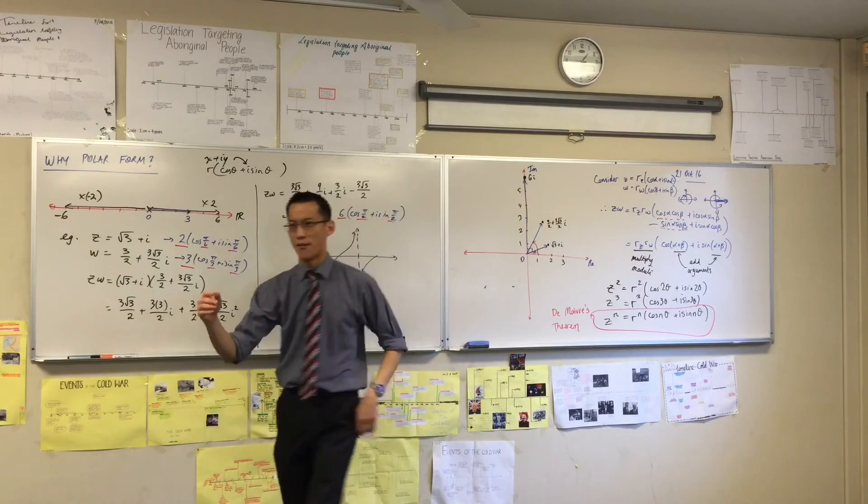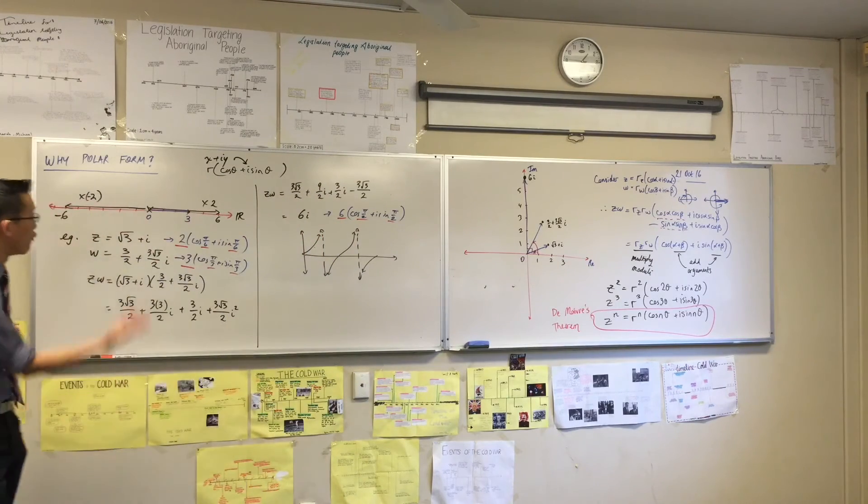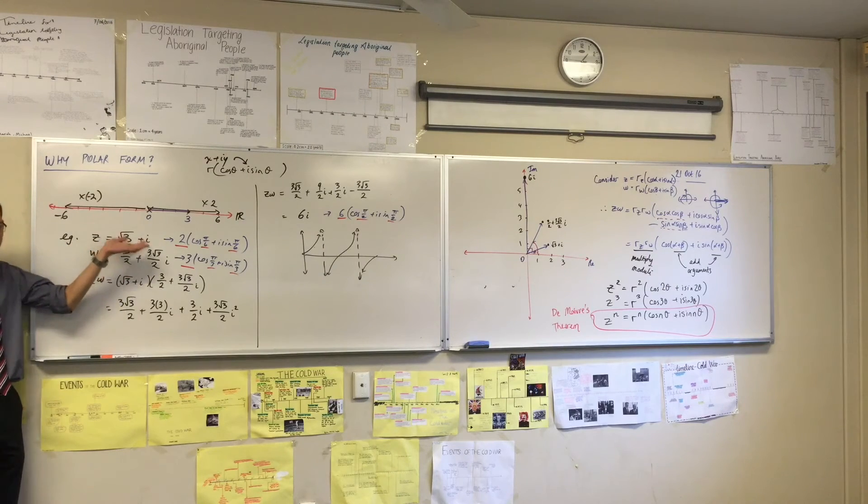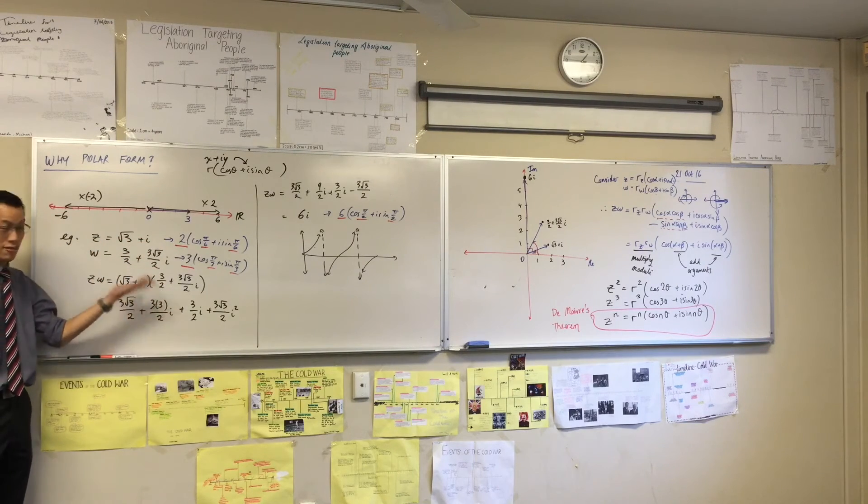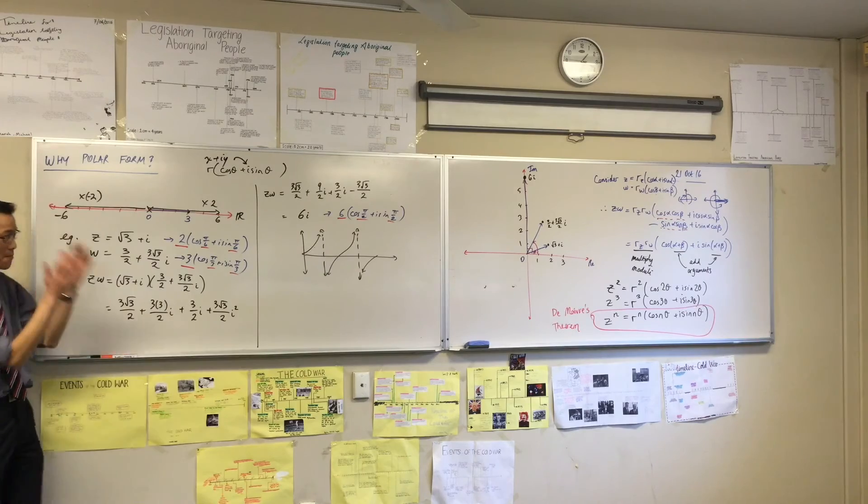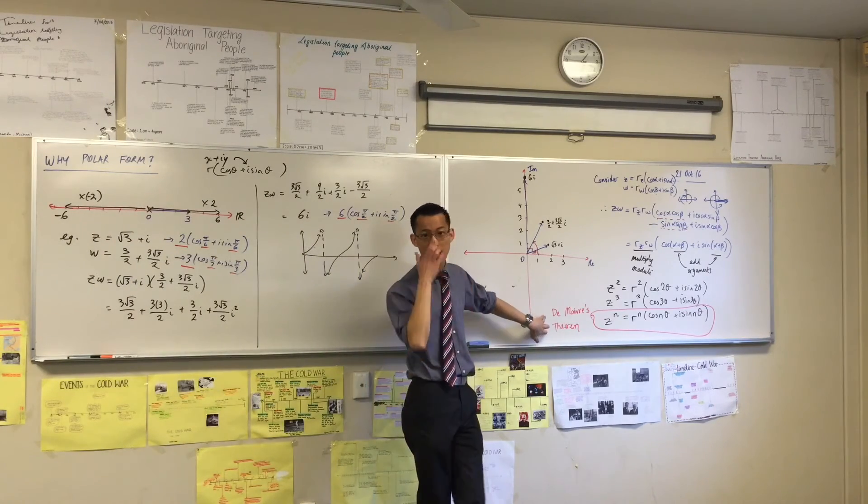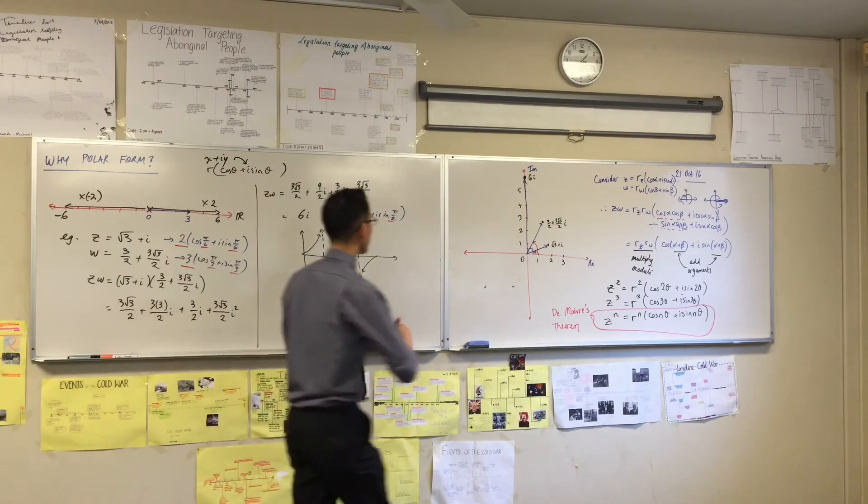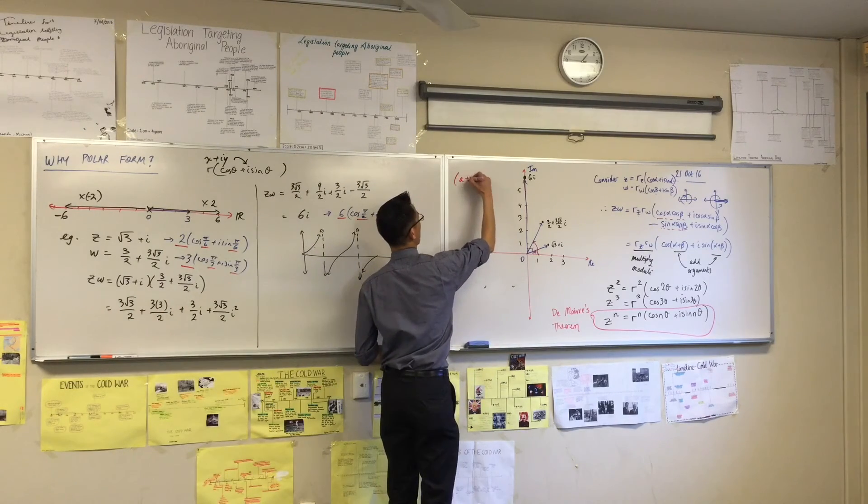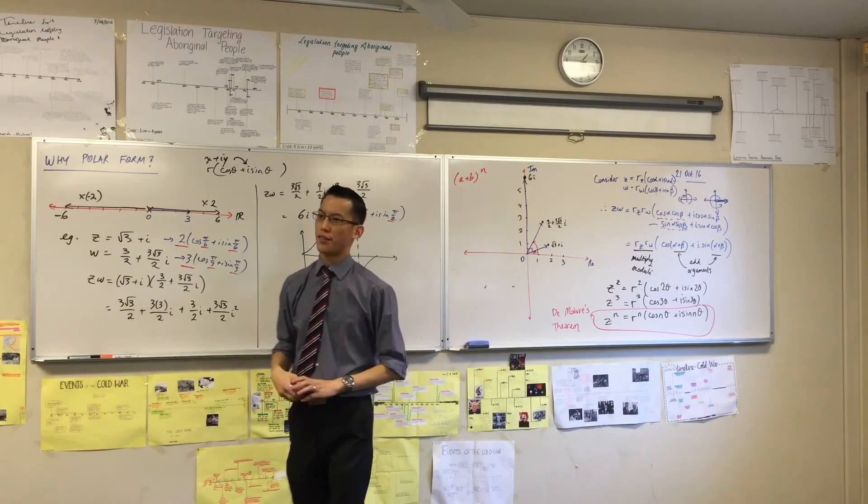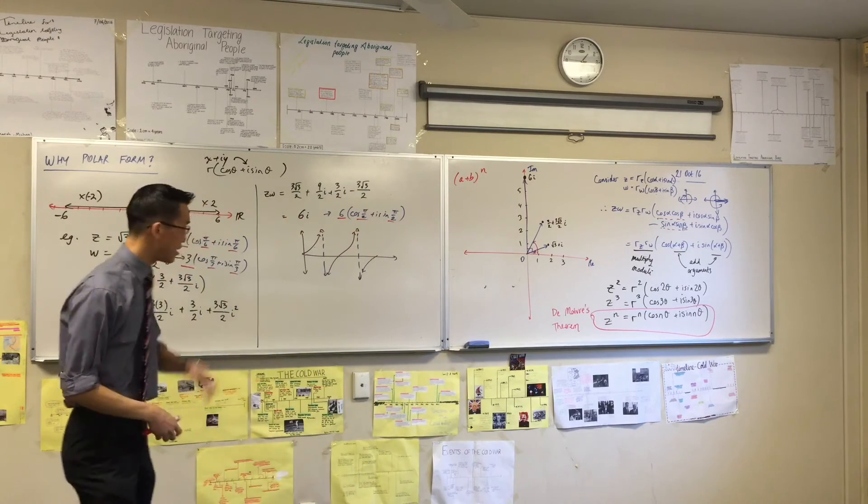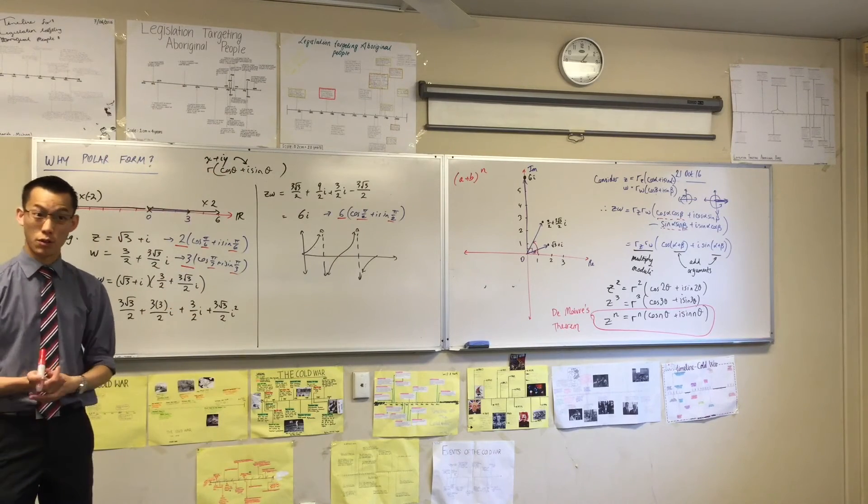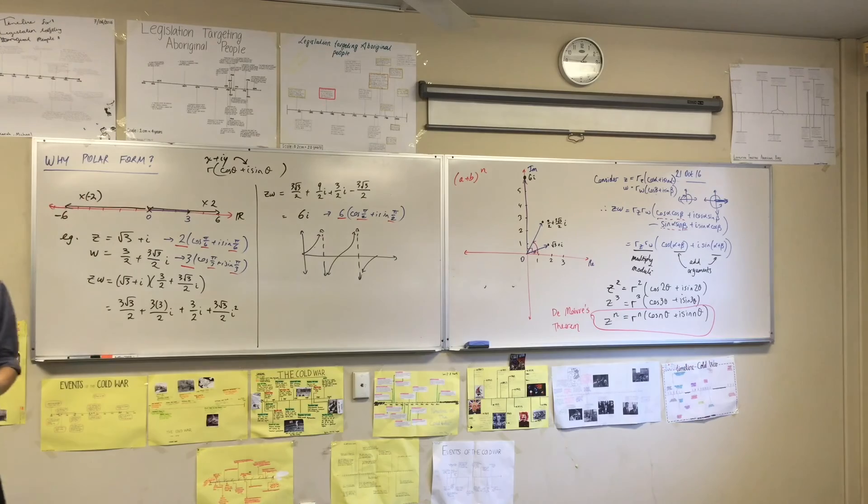So De Moivre's theorem is a very powerful application of polar form, and you can use this to just make mincemeat of... Can you imagine if you had to do like three or four or five complex numbers together in rectangular form? What a nightmare. But here, this is kind of like the equivalent of binomial theorem, right? Now that you guys know what binomial coefficients are, right? You don't have to fluff around like with Pascal's triangle or something like that. You can just go straight to these numbers. And that's what De Moivre's theorem is for complex numbers. Right, does anyone have any questions?